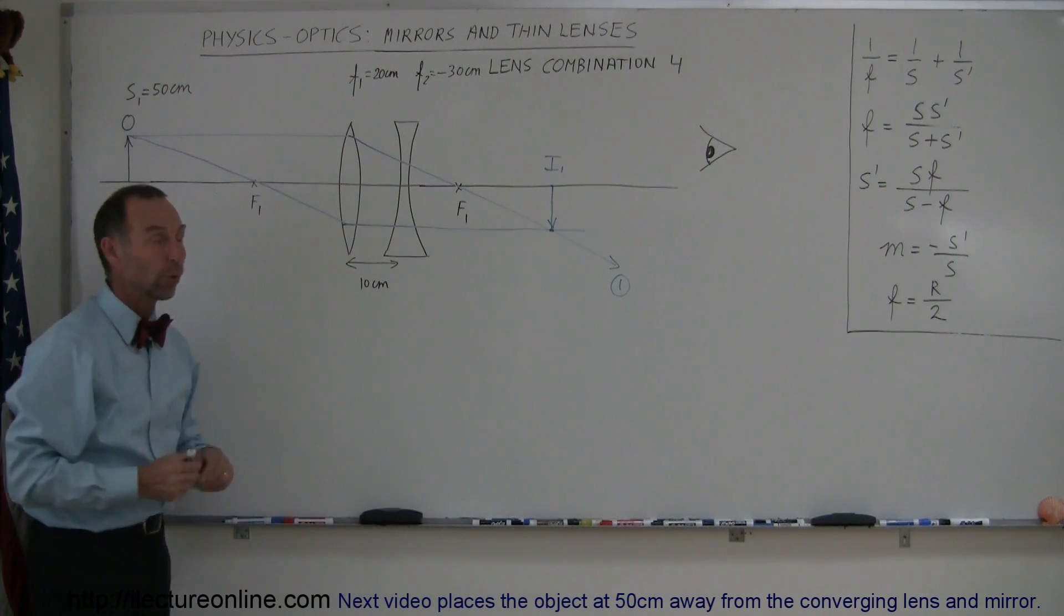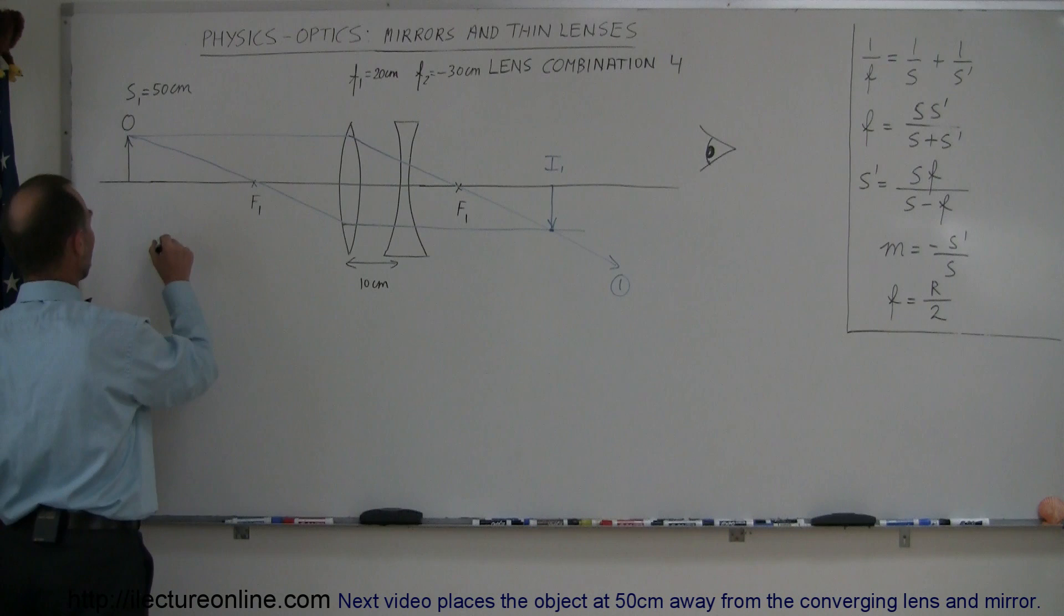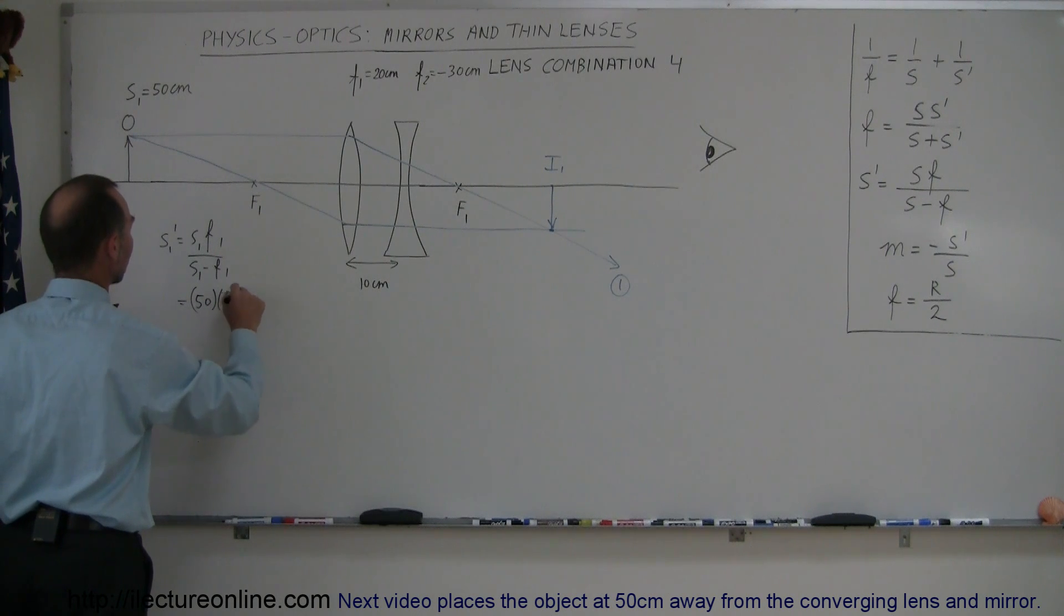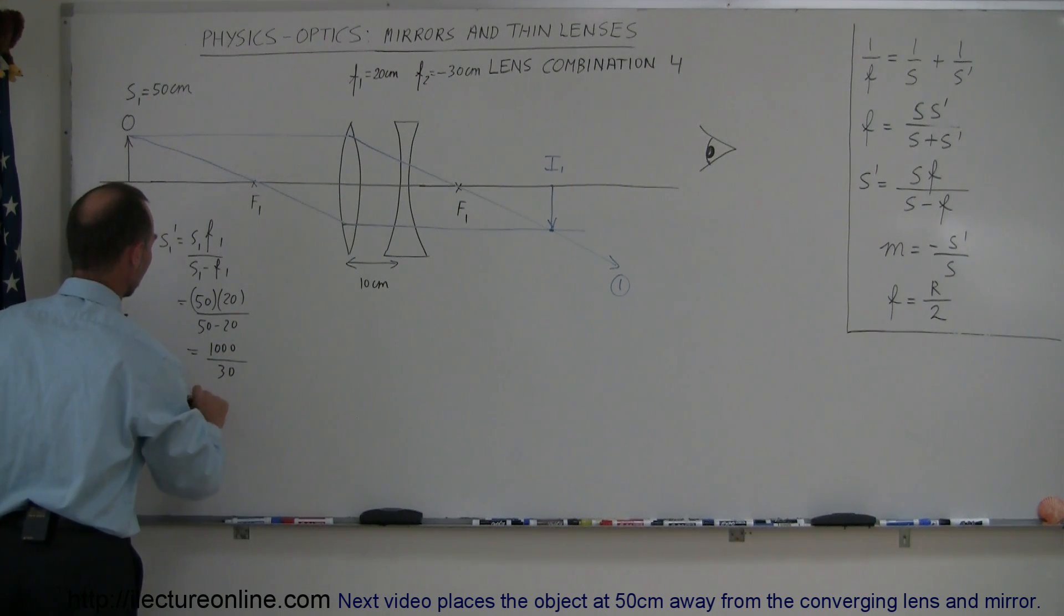To find the location of image 1 we're going to use our standard equation where S1' equals S1 F1 divided by S1 minus F1. So S1 is 50 centimeters, F1 is 20 centimeters, so that's 20 divided by 50 minus 20. This equals a thousand divided by 30, which equals 33.3 centimeters, and that is the distance to the first image.